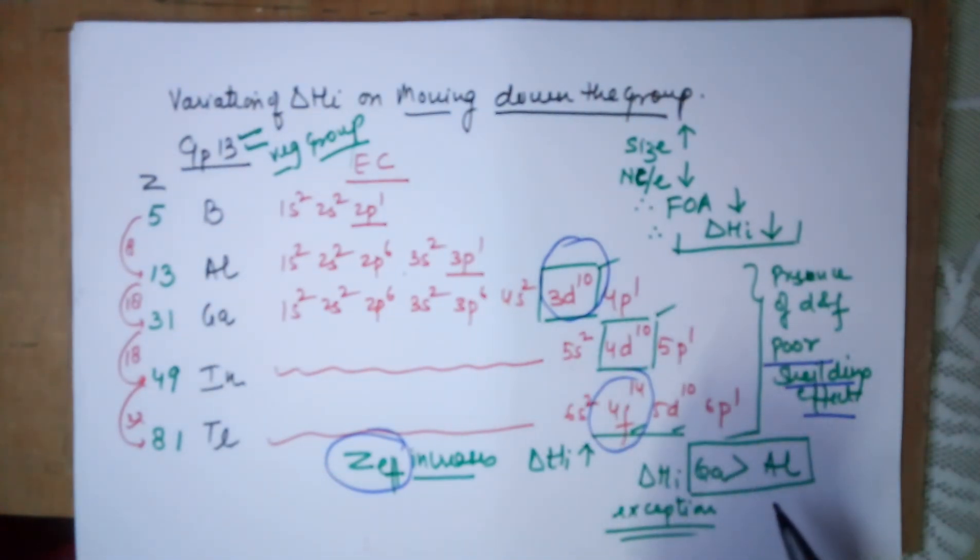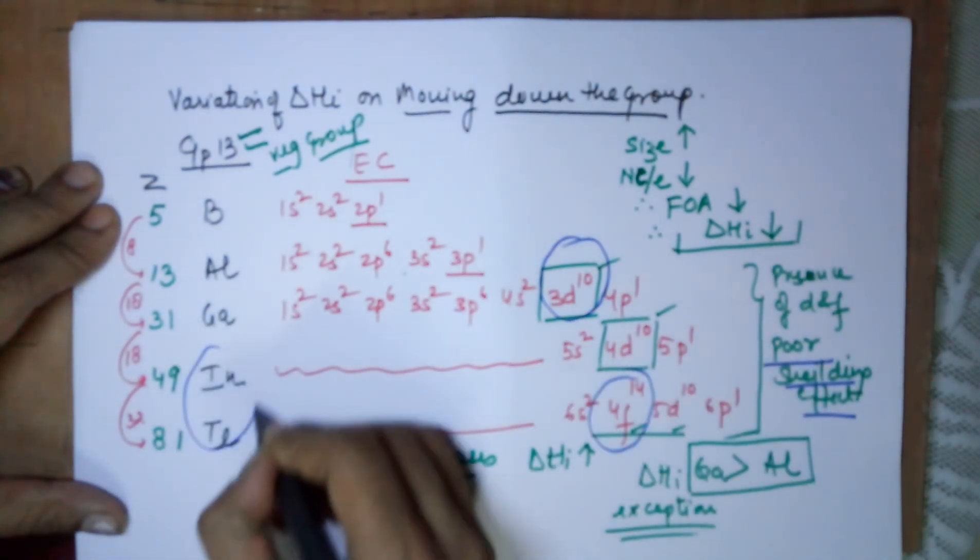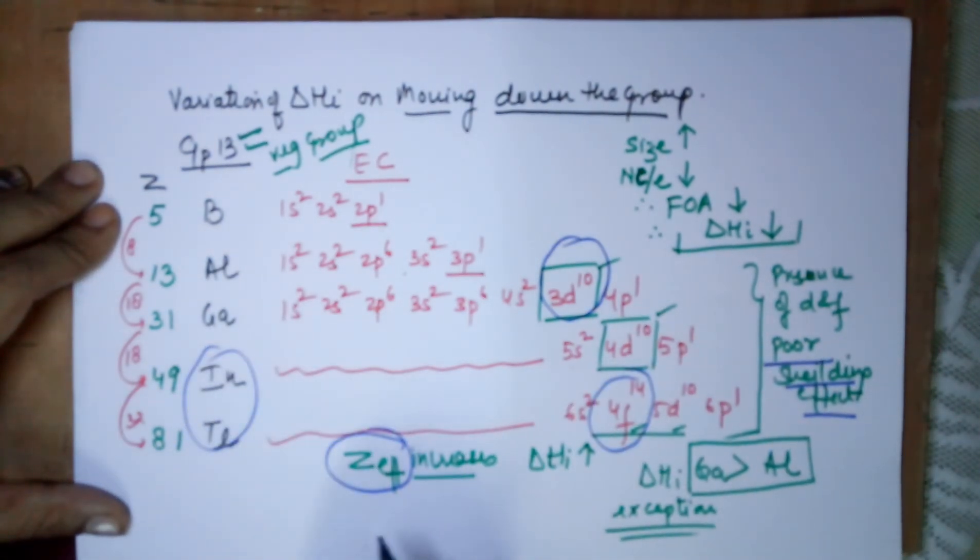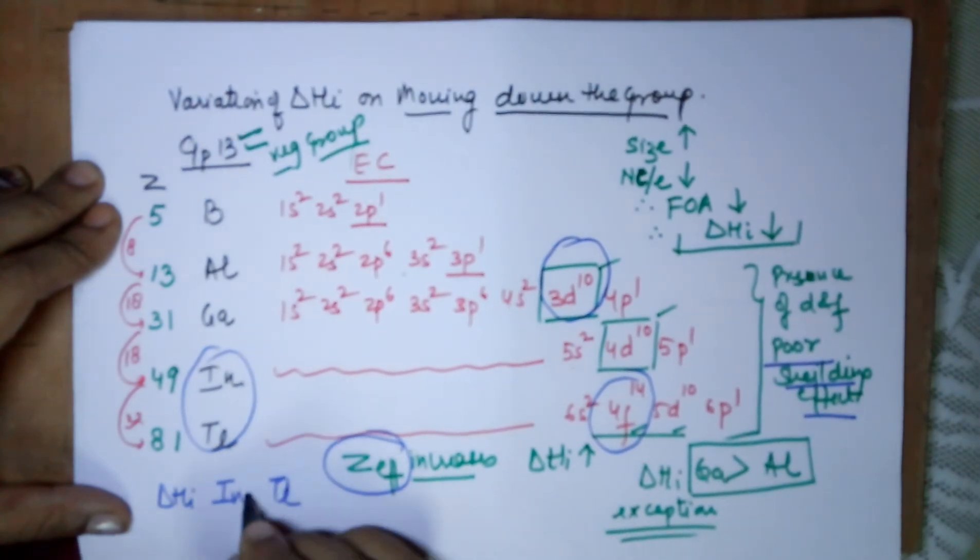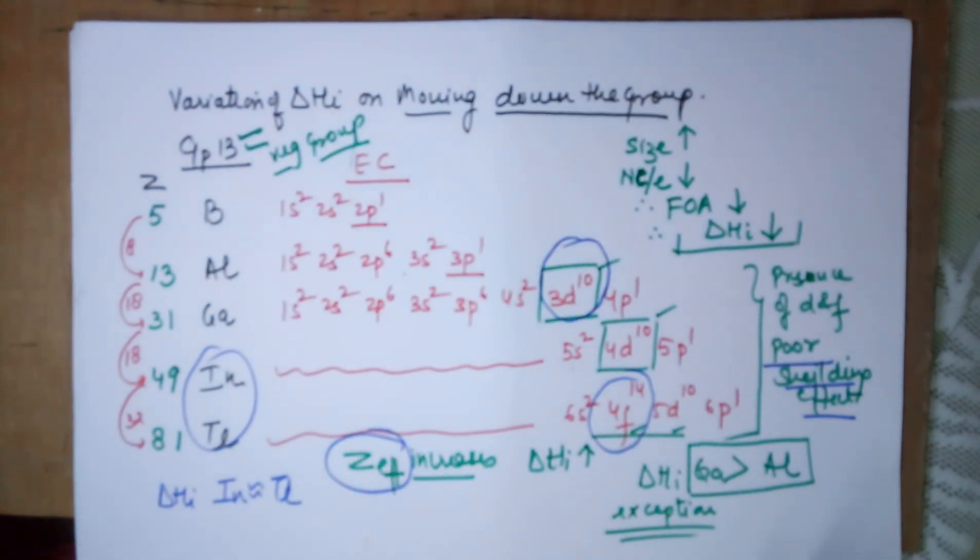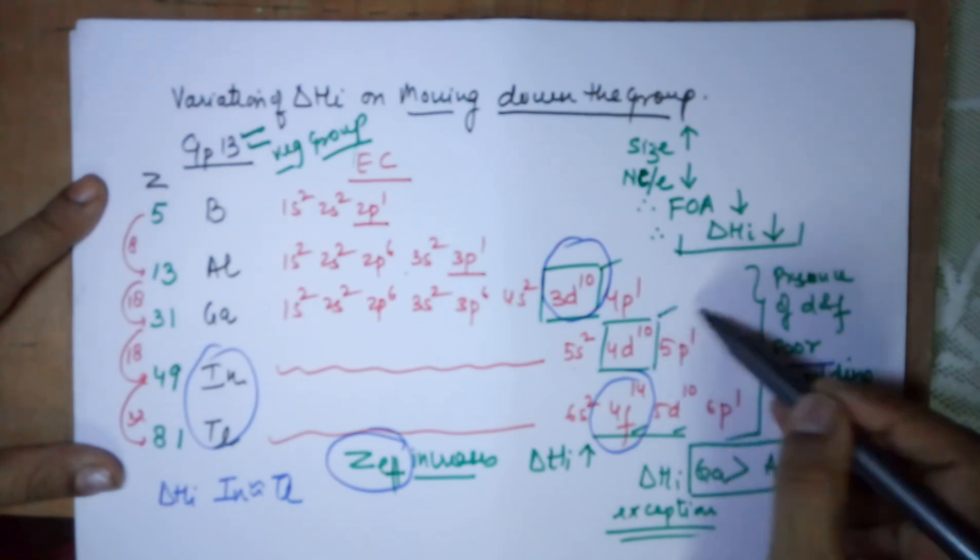Hence the ionization energy does not decrease much. In fact, the last two members have almost the same ionization energies normally. So when we talk about ionization energies of indium and thallium, they are almost the same. Last two members generally have almost similar ionization energy, and it rests on their poor shielding effect due to the presence of d and f subshells.